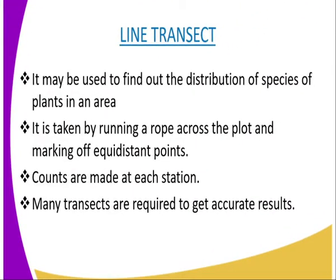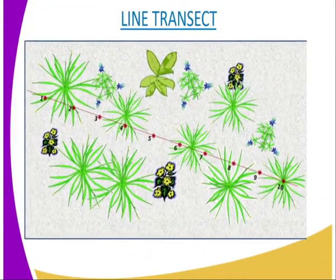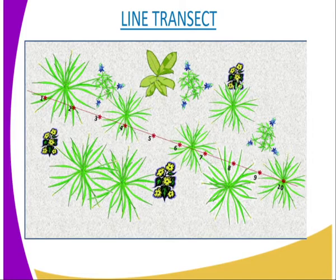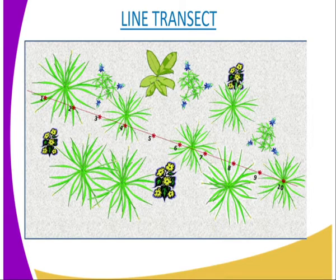We are going to start with the line transect, whereby a line transect may be used to find out the distribution of plants in an area. A line transect is taken by running a rope across the plot and marking off equidistant points. Now a diagrammatic representation of the same will help you understand what I am explaining.